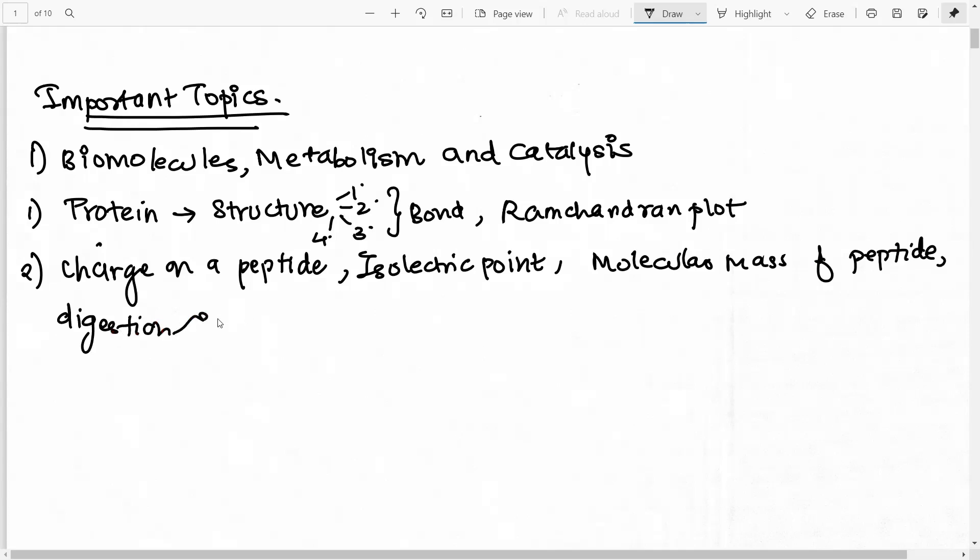Then based on the digestion, also they ask questions. So we know that these enzymes, the proteases that we have, like the trypsin, chymotrypsin, they have very special sites at which they cut - the serine proteases basically. So they can give you a peptide, a long peptide and tell you or ask you to identify what are the possible fragments. This is a very important question with respect to GATE and CSIR NET as well. So this type of questions they do ask.